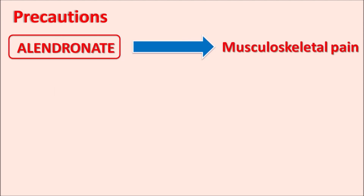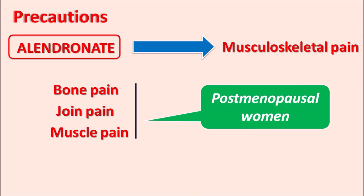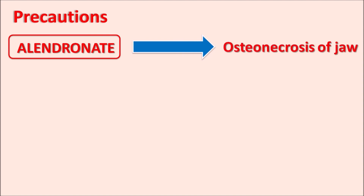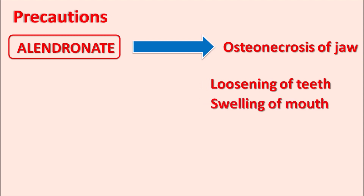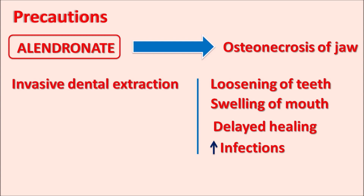Alendronate can produce musculoskeletal pain — bone pain, joint pain, and muscle pain — which is more common in postmenopausal women treated for osteoporosis. Another important precaution is osteonecrosis of the jaw. This drug can cause loosening of the teeth, swelling of the mouth, delayed healing after tooth extraction, and increased risk of infections. These effects are particularly observed when alendronate is given to patients after invasive dental procedures, where healing is decreased and osteonecrosis of the jaw may occur.